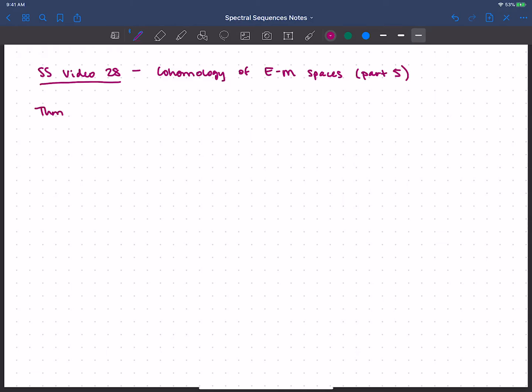So our goal is to prove this theorem of Serre that we saw in the last video, that we know the cohomology of K(Z mod 2n, n) in mod 2 coefficients completely, so not just up to degree 2n. It should be isomorphic to a polynomial algebra on square i iota n, where i runs through all admissible sequences with excess less than n.